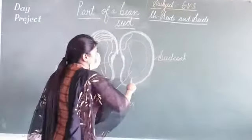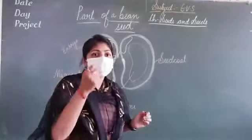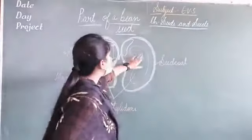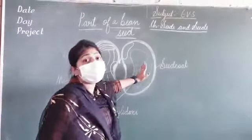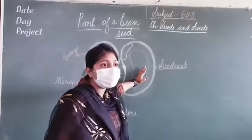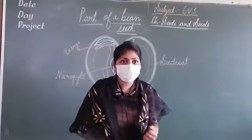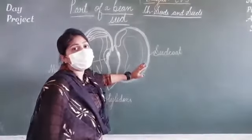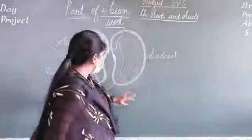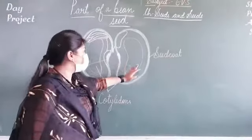And the inner part, the white color part - if you open the seed, you will see a white or yellowish color part. This is the part of the seed, or you can also say it is the food for the seed. As we humans have food to be healthy and fit, the same way, seeds also need food to grow. So the food for the seed is the cotyledon, the inner part of the seed.